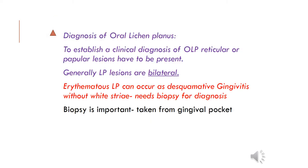Diagnosis of oral lichen planus: to establish a clinical diagnosis, it is important to identify reticular or papular lesions, and lichen planus lesions are generally bilateral. Erythematous lichen planus can occur as desquamative gingivitis without white striae — completely red gingiva — and in these cases a biopsy is needed. The biopsy should be taken from the gingival pocket area in desquamative gingivitis cases, or from the buccal mucosa if that is where the lesion presents.